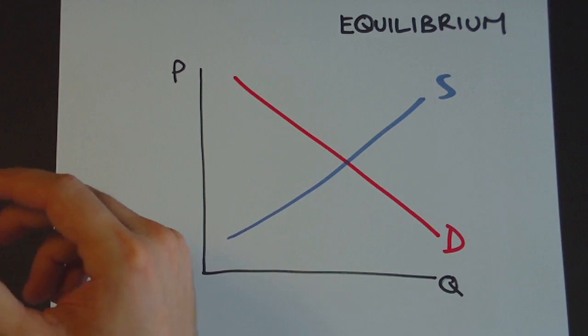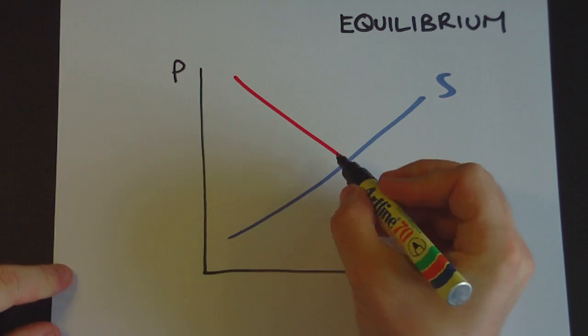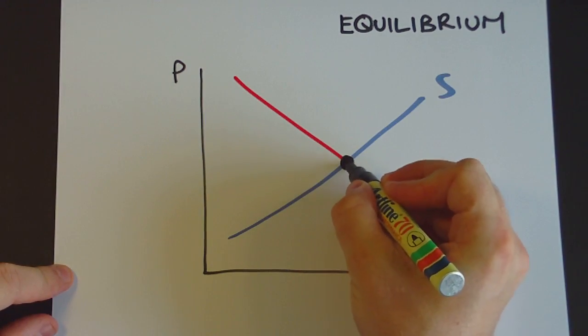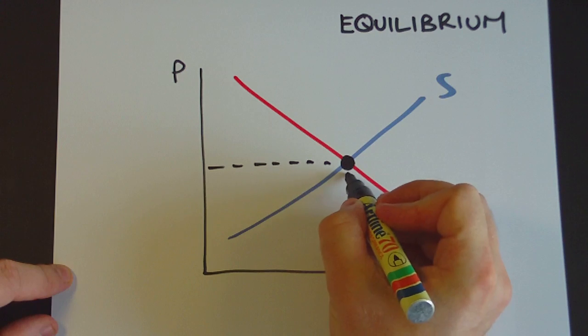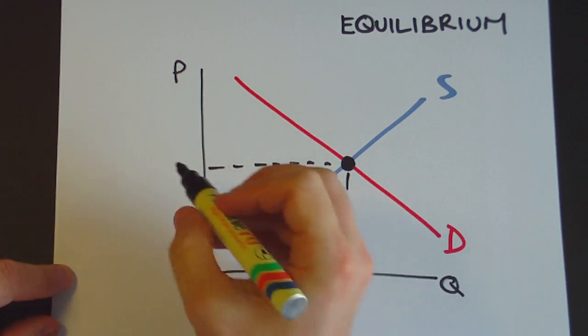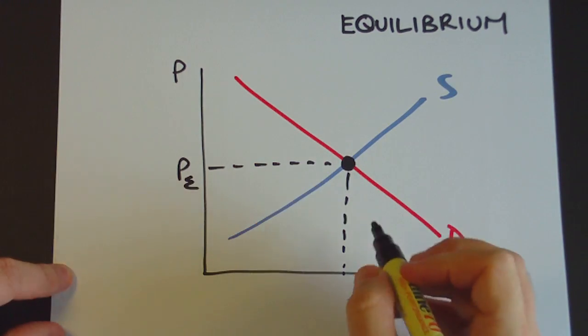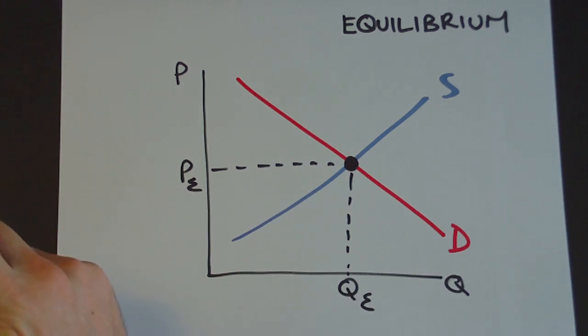So where does the market actually operate? Well it's at the intersection of supply and demand at this point here if there's no interferences in the ordinary market mechanism. So that would be the equilibrium price and that's the equilibrium quantity right there.